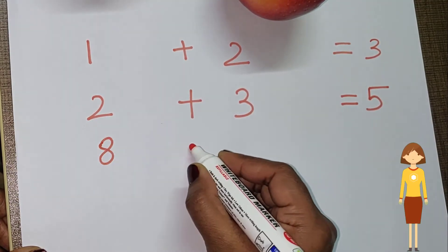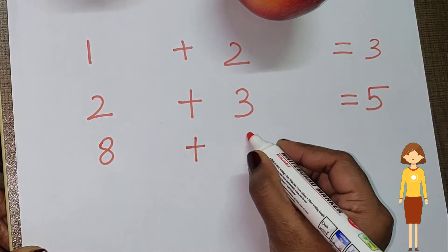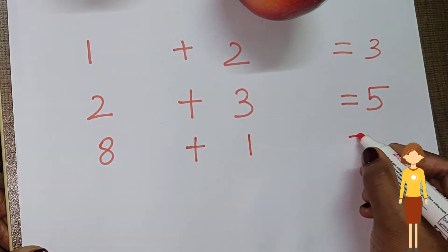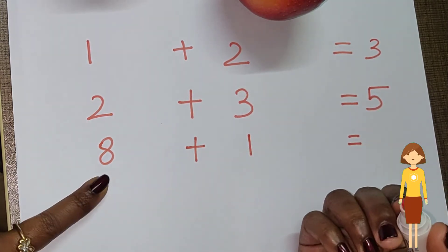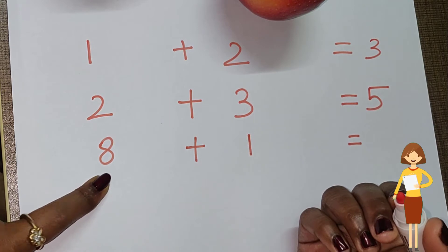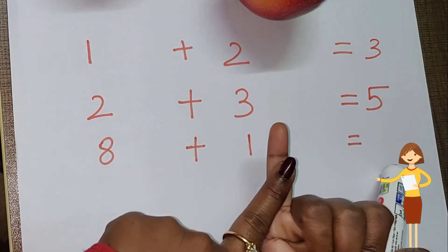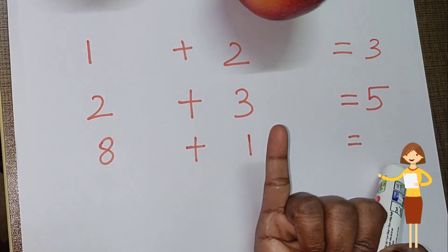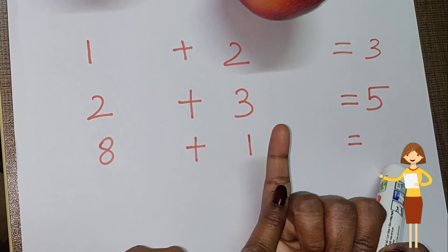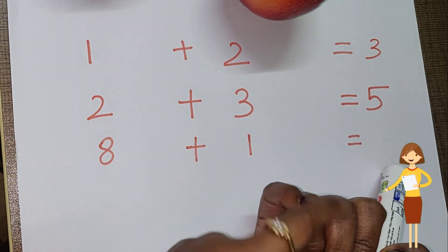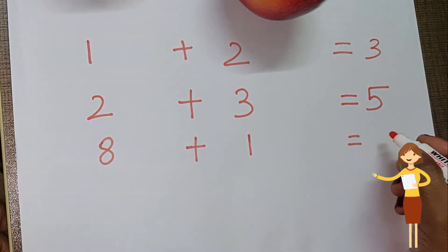Another problem: eight plus one is equal to dash. Eight we are keeping in mind and one in the finger. So after eight: nine. The answer is nine.